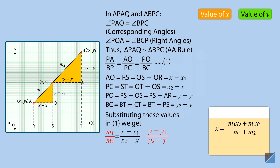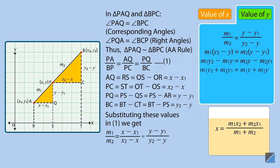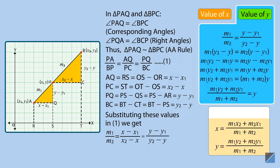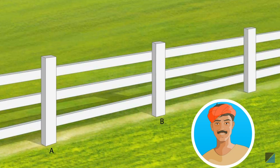Now let us solve the first and third parts of the equation to obtain the value of y. You can substitute the values of m₁, m₂, x₁, x₂, y₁, and y₂ to obtain the values of x and y. This formula is known as the section formula. Now that you have obtained the coordinates of point P, you can easily determine its distance from either end of the poles using the distance formula. You can thus help the gardener determine the exact locations at which the saplings need to be planted. Now that we have learned the derivation of the section formula, let's apply it to solve a problem.